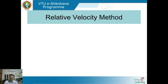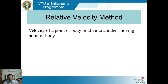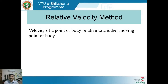The velocity of a point or body relative to another moving point or body is normally known as relative velocity. When a point or body moves with respect to a fixed frame or fixed link, its velocity is known as absolute velocity. When two links are joined together and moving, the velocity of one link is relative to the velocity of the other.